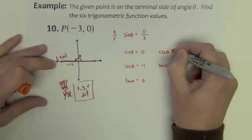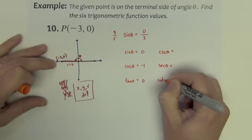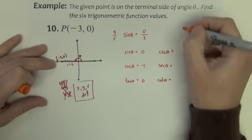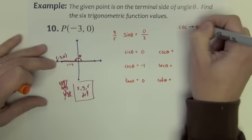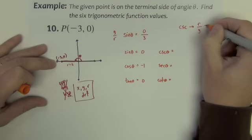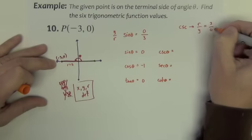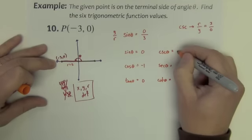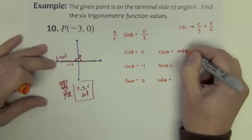Cosecant. Cosecant was r divided by y. In this case, that is 3 divided by 0. We cannot divide by 0. Let's say this is undefined.